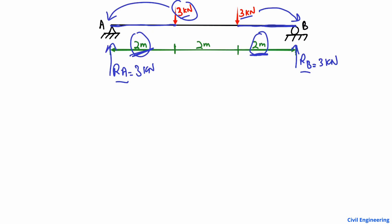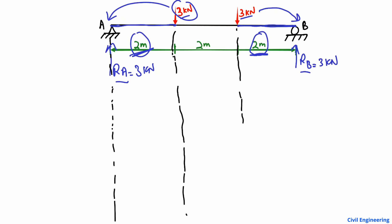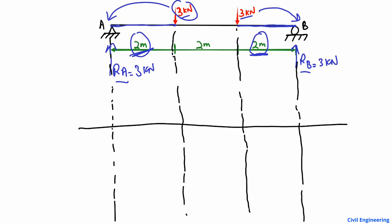To draw the shear force diagram, we first draw the reference line at zero. The loads and support reactions are marked along this line. Starting from point A on the left, RA acts upward at 3 kN, so we go up 3 kN from zero — this is the shear force at point A.